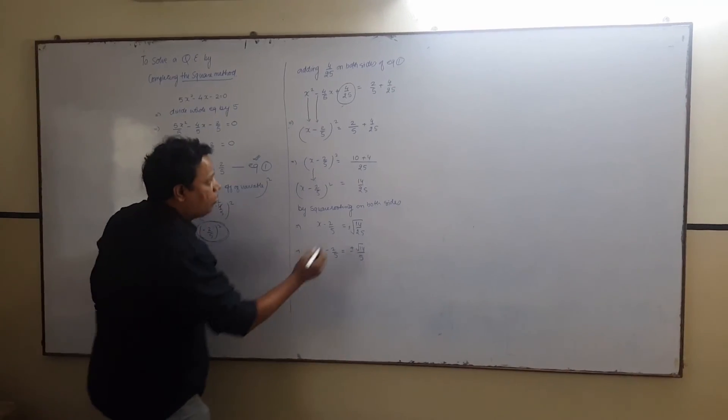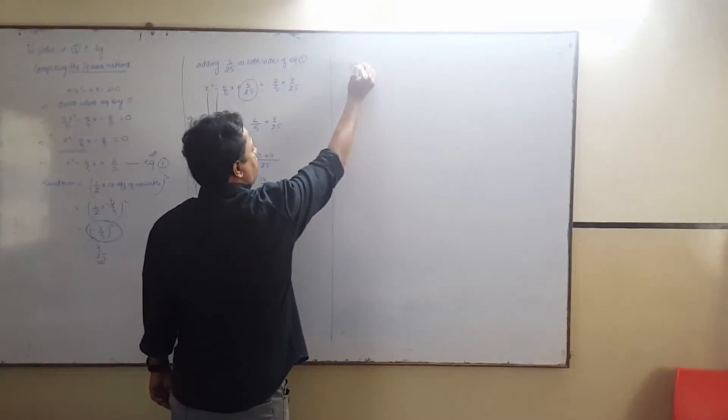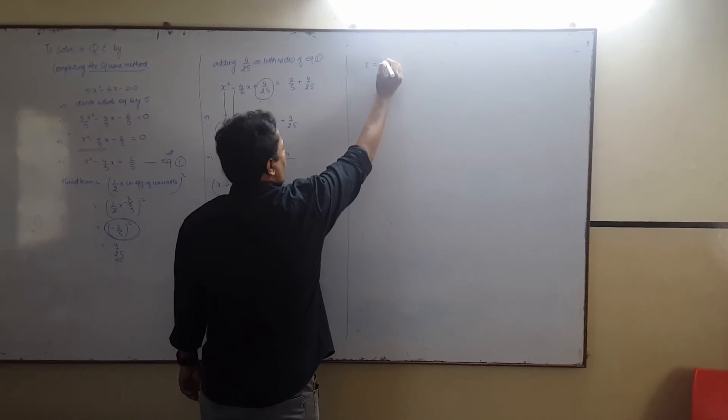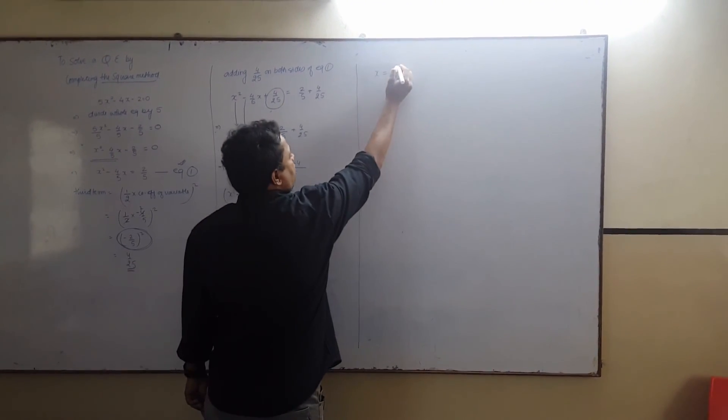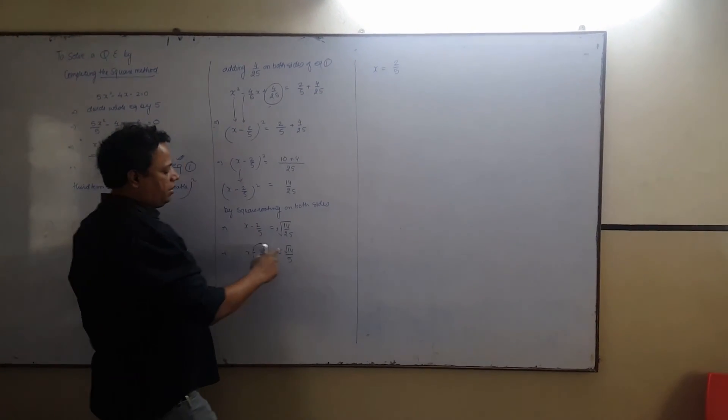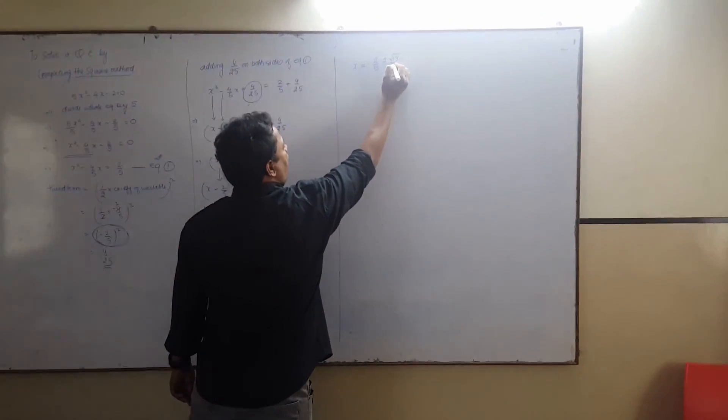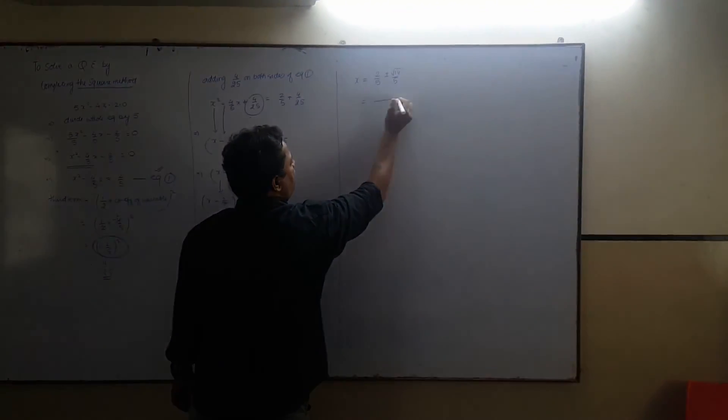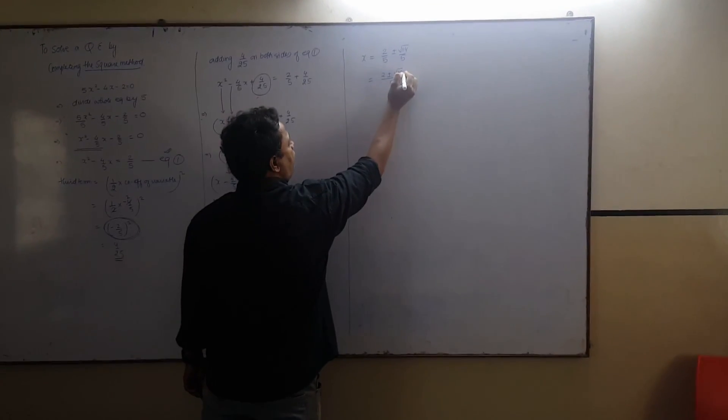Now, x always on one side. What you will get, x equals to, this minus 2 upon 5, we can write it as 2 upon 5, then, plus minus root 14 upon 5. What is common over here? LCM is 5, 2 plus minus root of 14.